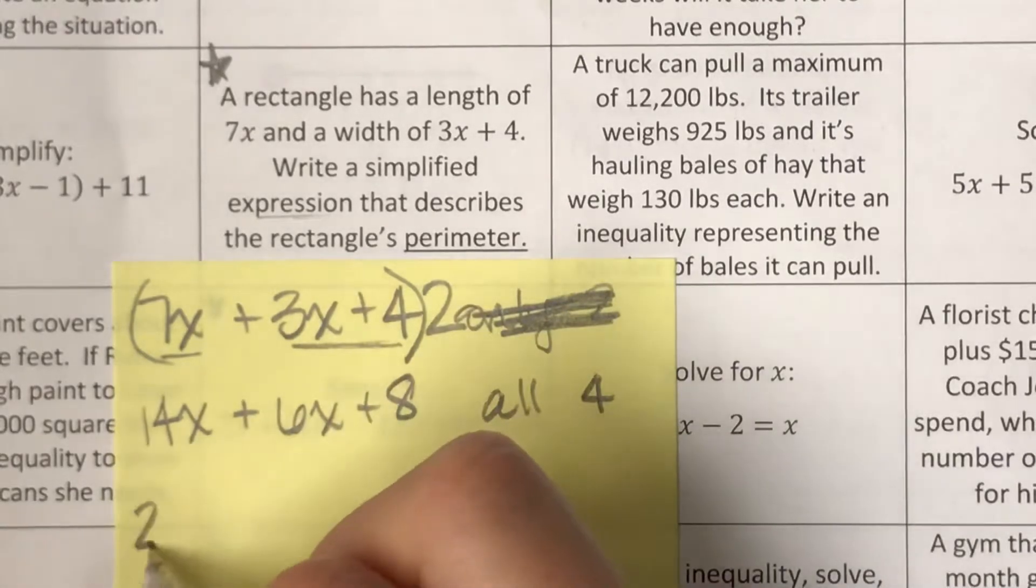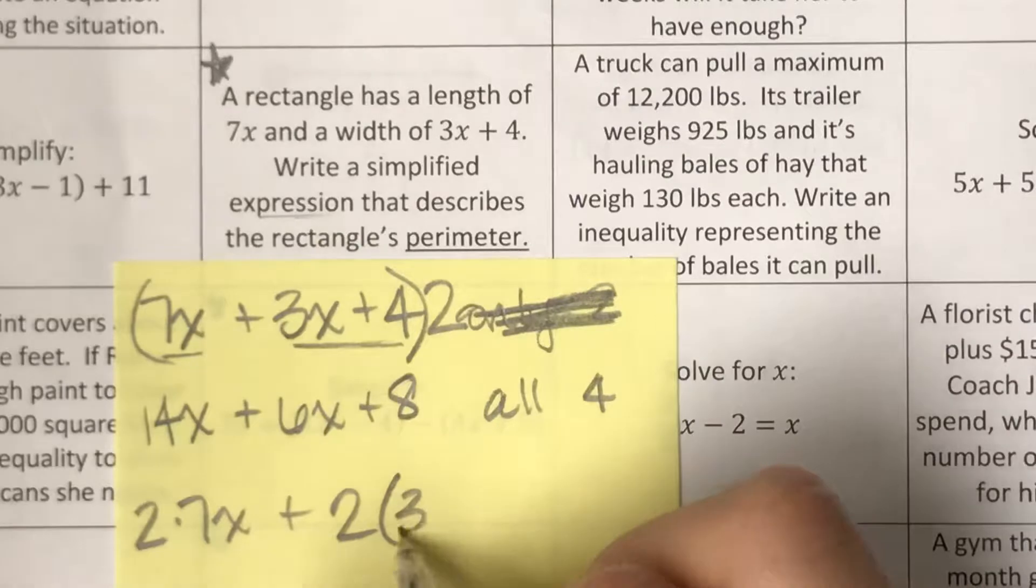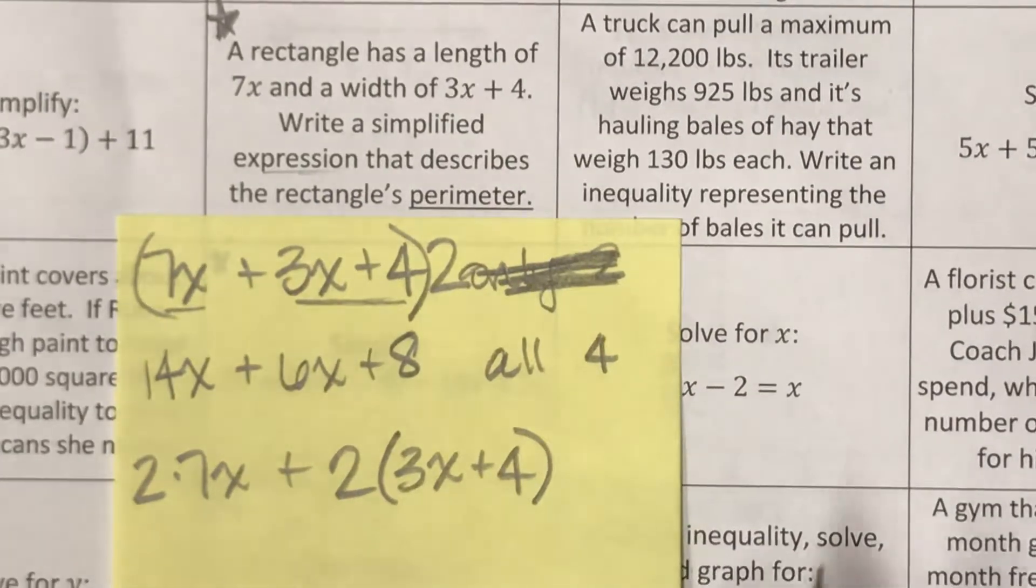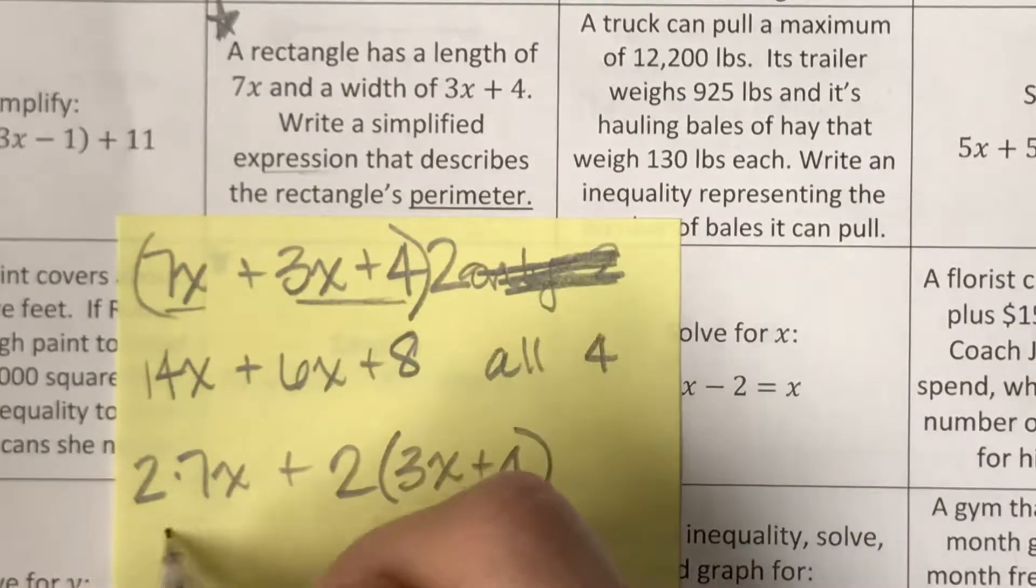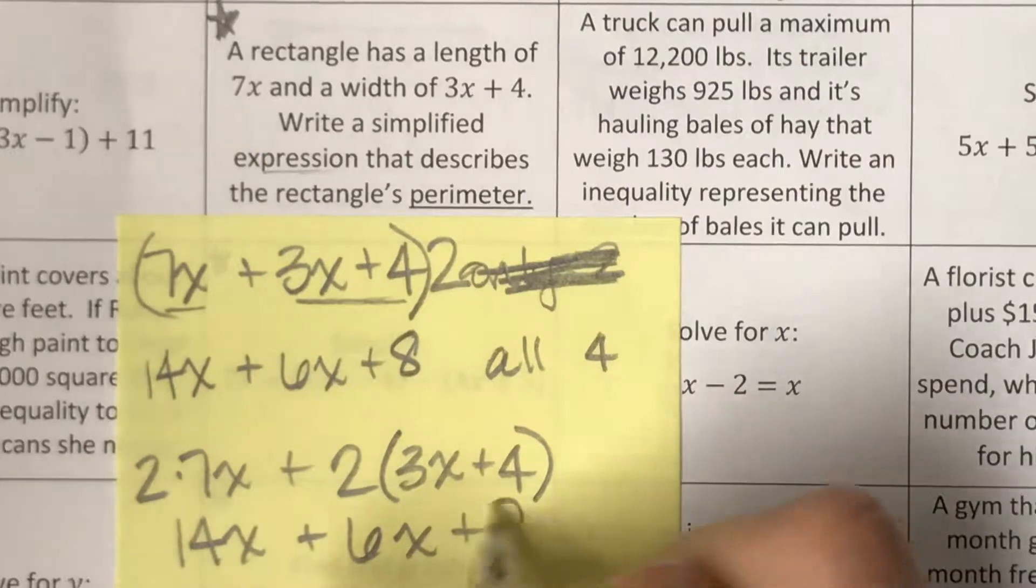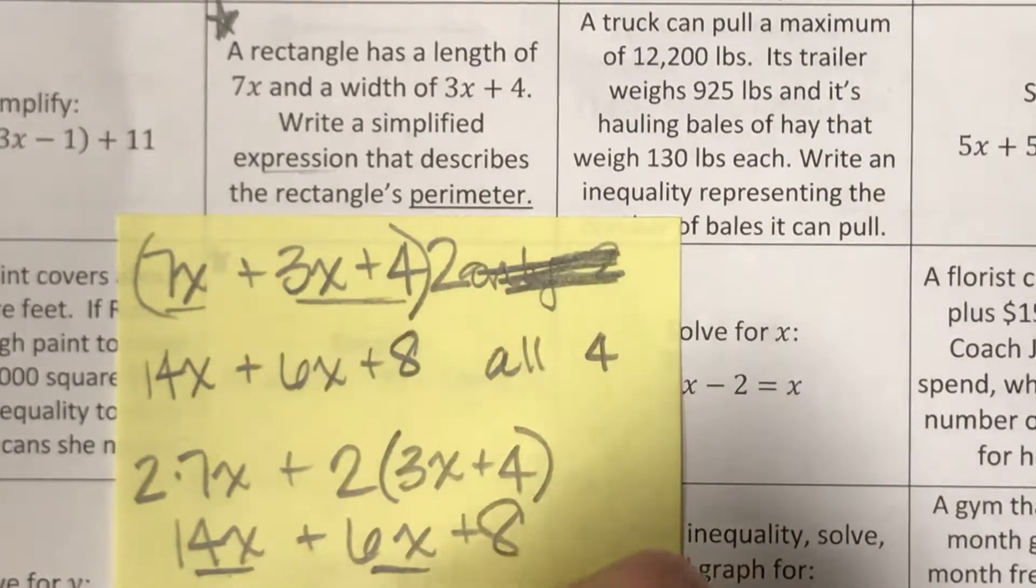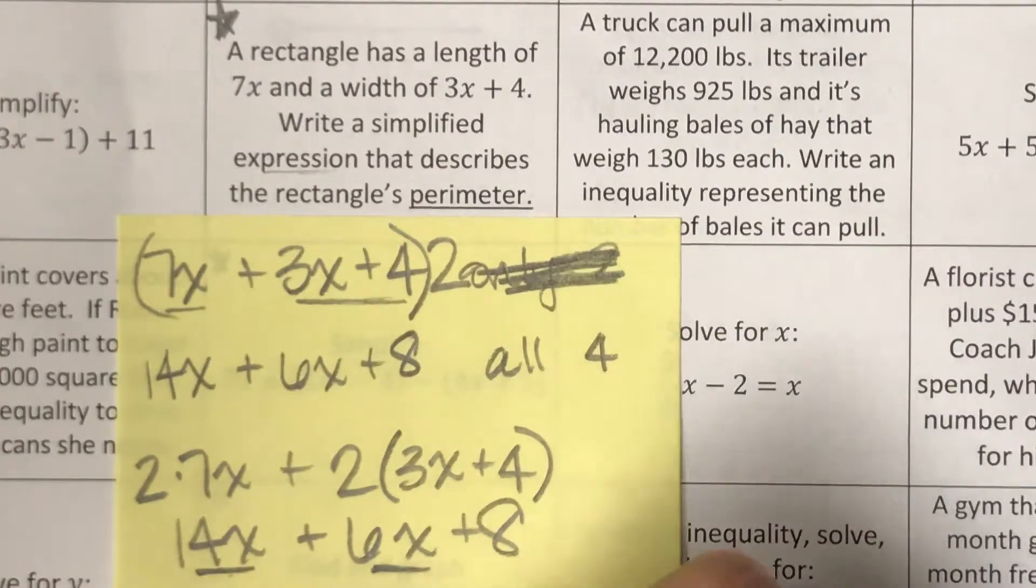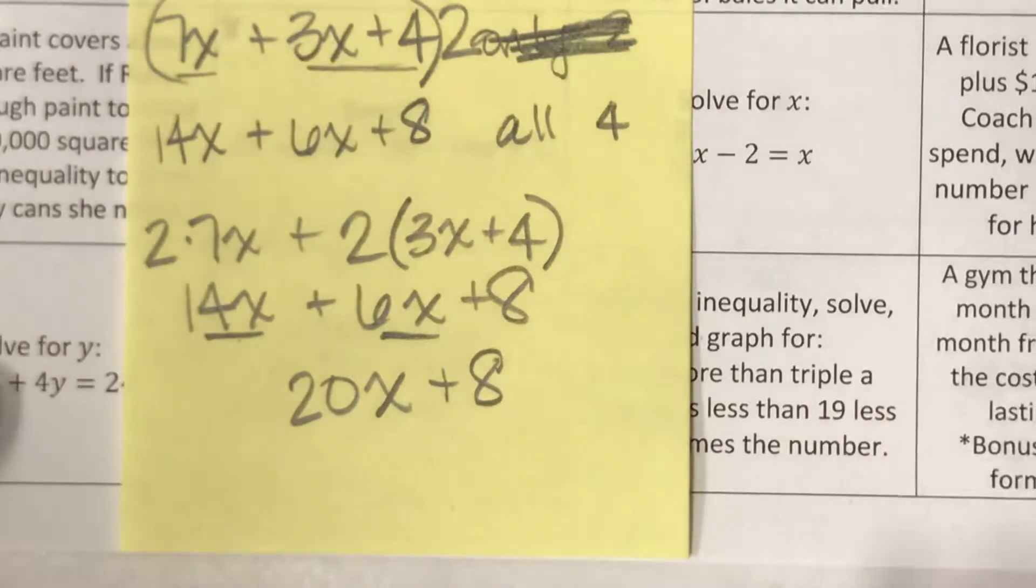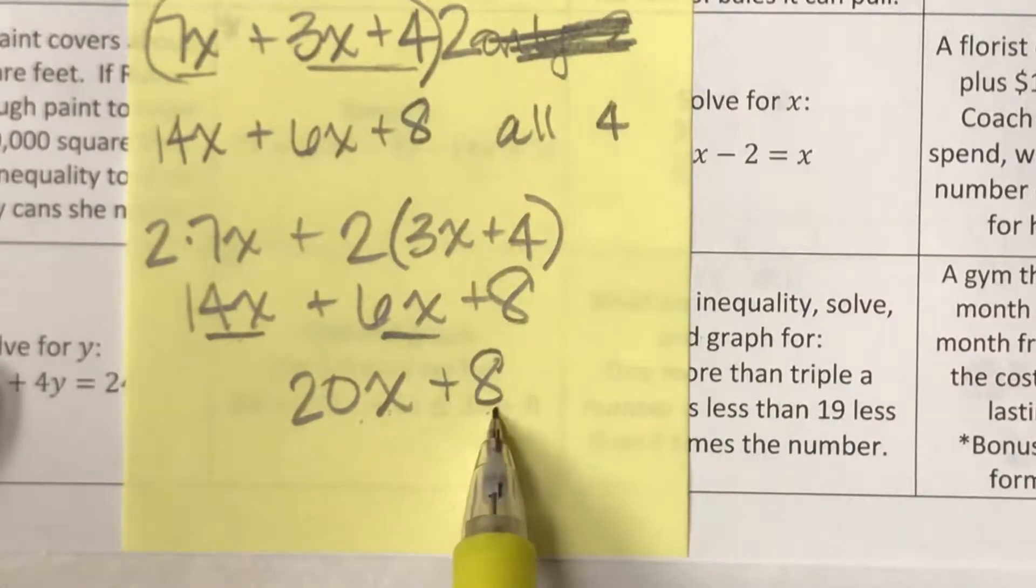You could also see like, oh, so 2 times 7x plus 2 times that other side. No matter what version you do though, you're going to end up kind of ultimately with this 14x plus 6x plus 8. And then to combine like terms and finish simplifying, I can go ahead and combine my variable, my like terms, and get 20x plus 8.